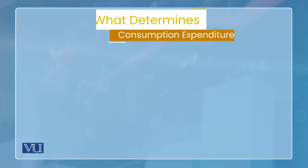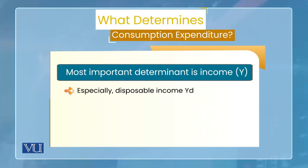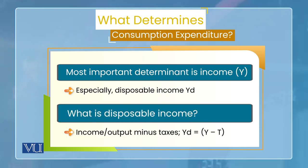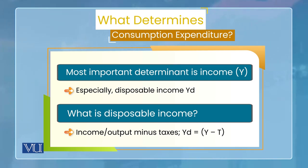इसमें goods भी शामिल हैं, services भी शामिल हैं, और goods के अंदर durable goods भी होती हैं और non-durable goods भी होती हैं। तो अगर ये consumption expenditure हैं, तो macro model के लिए हमें ये भी चाहिए होता है कि इस consumption को कौन से factors effect करते हैं — या इसका determining factor कौन सा है, कौन determine करता है consumption की value को।